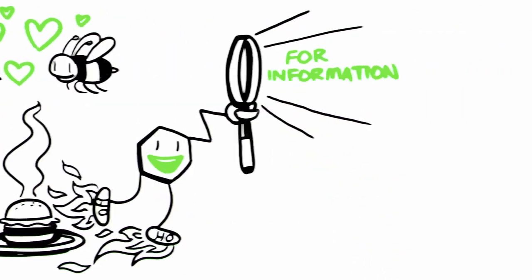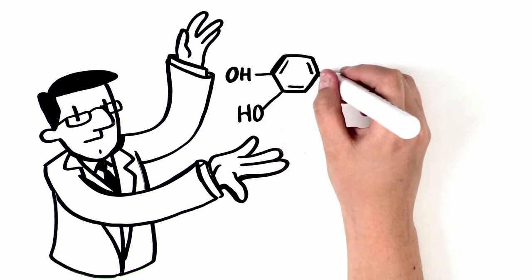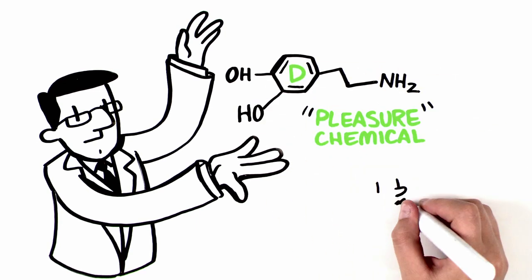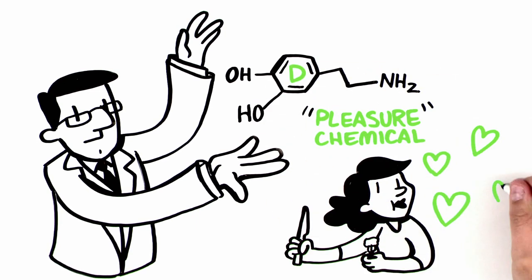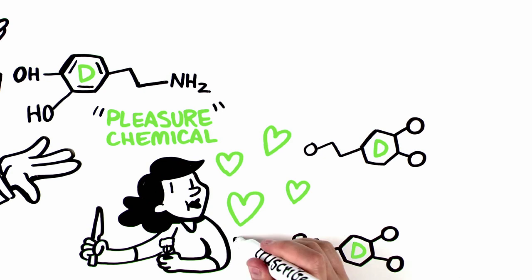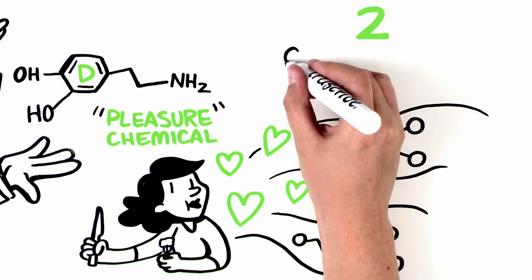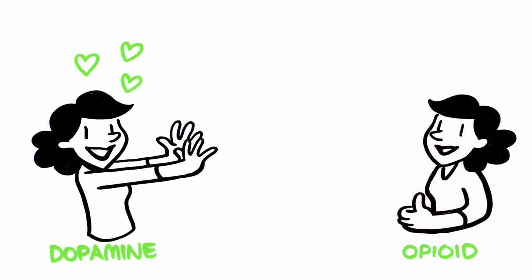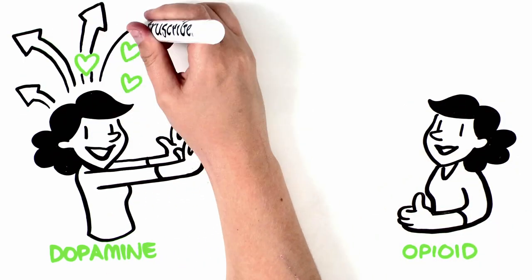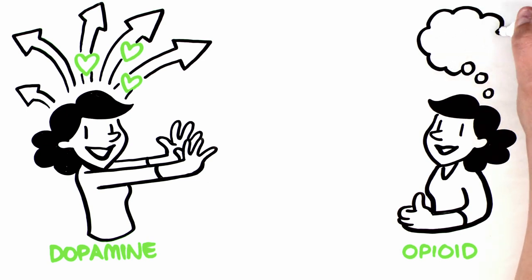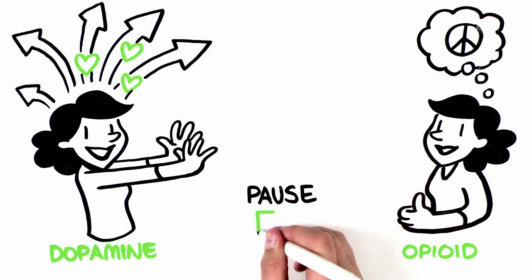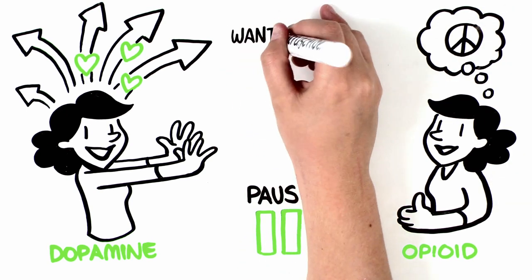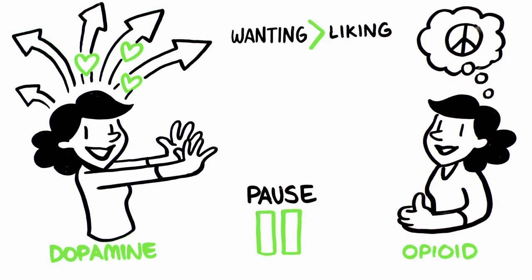Researchers used to think that dopamine was the pleasure chemical. When you did something pleasurable, eating or sex, then dopamine was released. But the latest research shows that there are really two complementary systems. While dopamine is the wanting system, the opioid system is the liking system. The wanting system propels us to action and the liking system makes us feel satisfied, so we pause our seeking. The wanting system is stronger than the liking system. We seek more than we are satisfied.